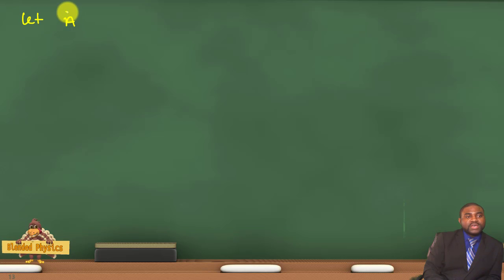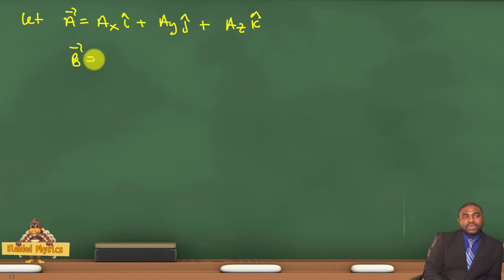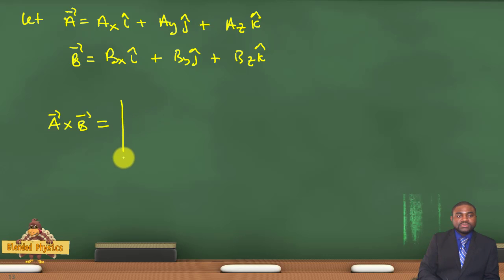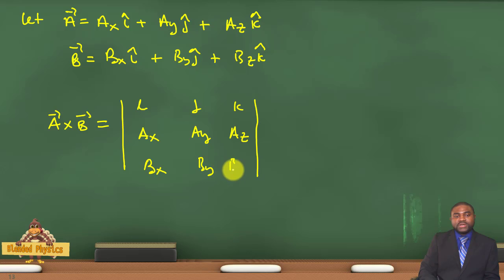Suppose A is equal to Ax i plus Ay j plus Az k, and B is equal to Bx i plus By j plus Bz k. Then A cross B will be equal to the determinant: i j k, Ax Ay Az, Bx By Bz.